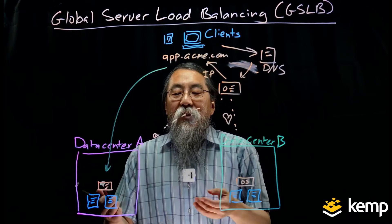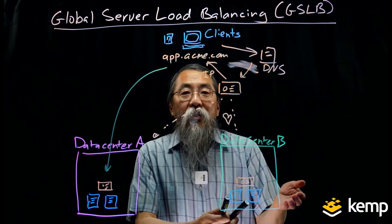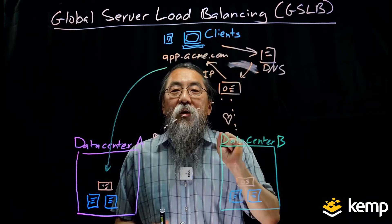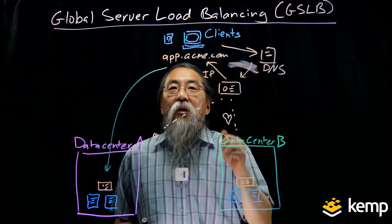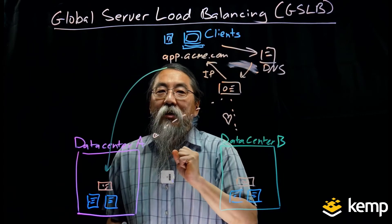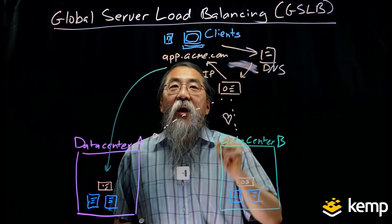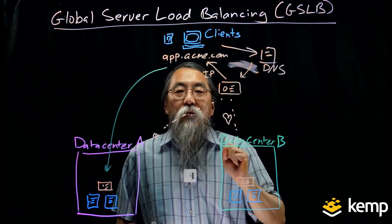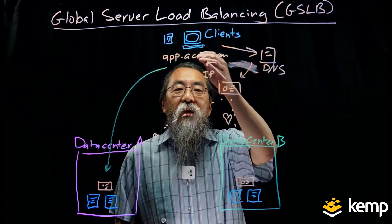You can also do geographic routing. For example, data center A could be in North America and data center B in Europe. If a client is coming from the U.S., the GSLB device can say this client is coming from the U.S., so I'll give out IP address A and send traffic to data center A in North America. If the client is coming from Europe, the global load balancer can say send traffic to data center B in Europe, giving out IP address B.